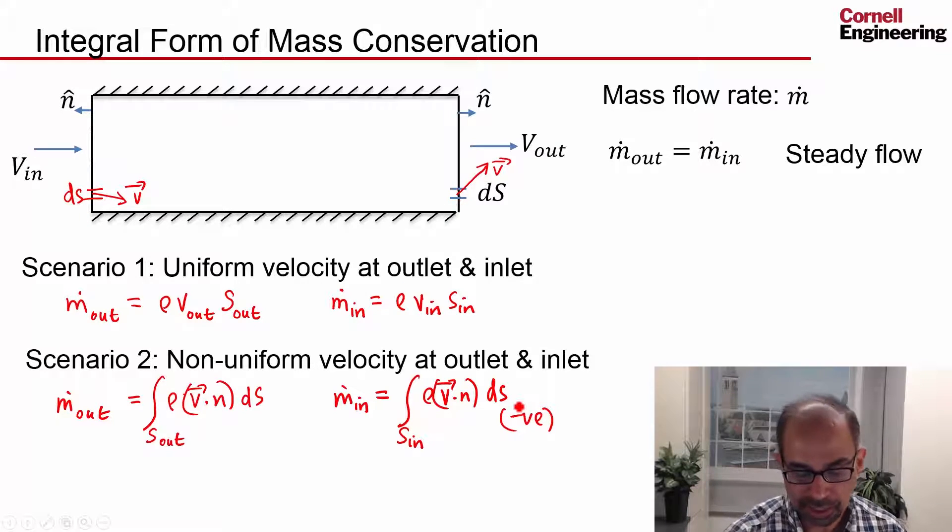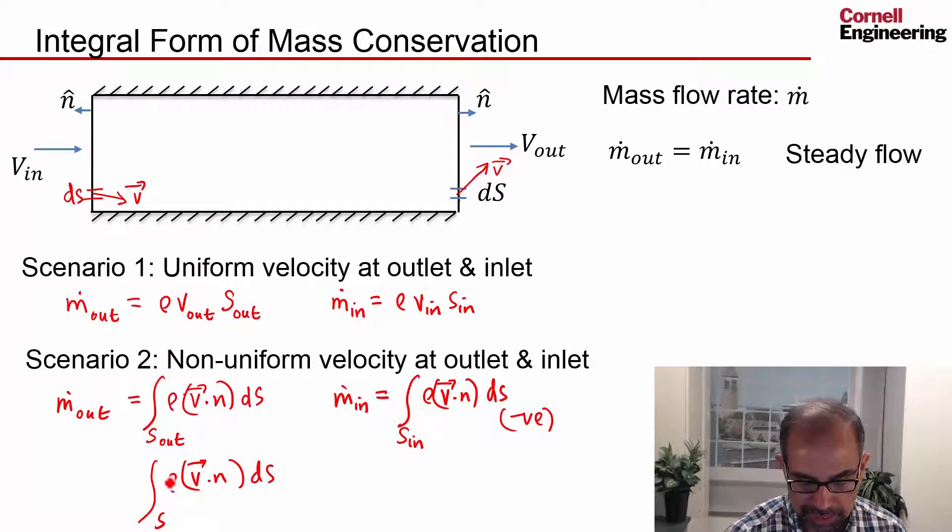And in fact, what's done is you can integrate over a closed surface area. So if you define that as my control volume, and then you integrate over the surface of that control volume, which is called a control surface, you'll get ρv dot n ds over that surface. So here, that surface is going to be that rectangle.